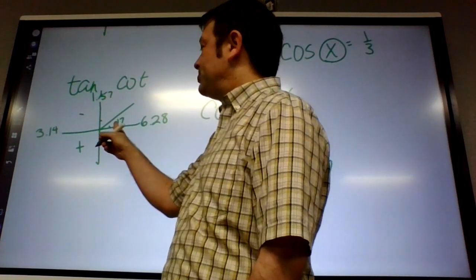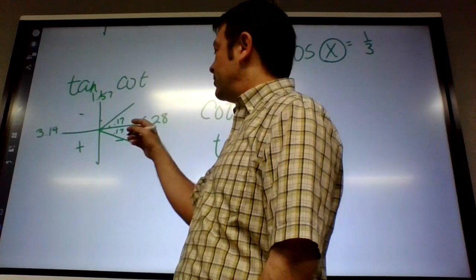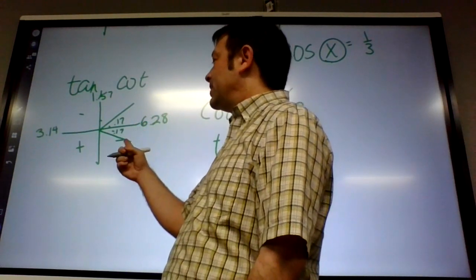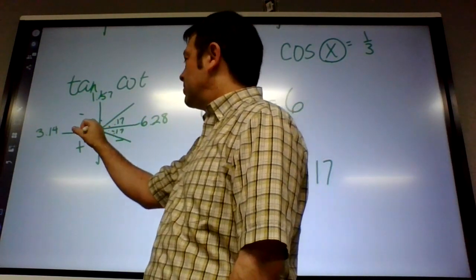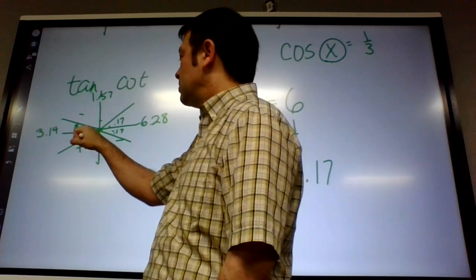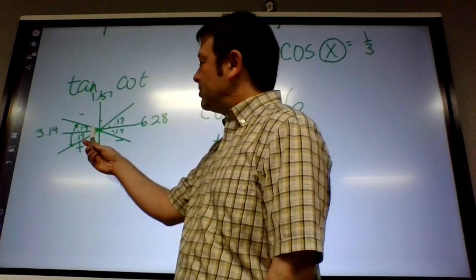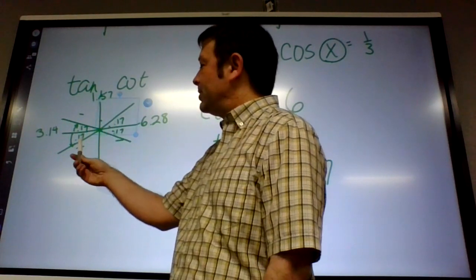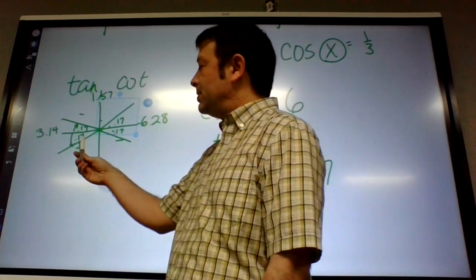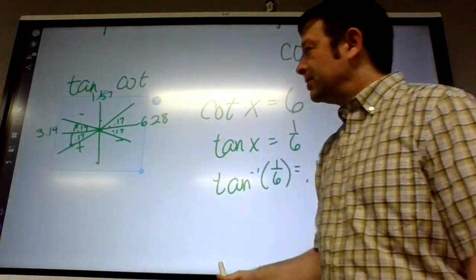.17 is basically our reference angle. It tells us all the angles that are like .17 away from this line are going to have the same ratio. So, but they're only going to be positive here and here on the tangent. So, we need the third quadrant angle that has .17 as a reference angle. So, we're going to do 3.14 plus .17, which is 3.31.